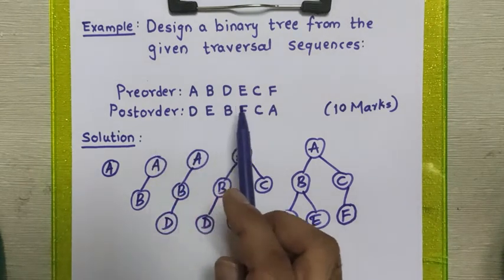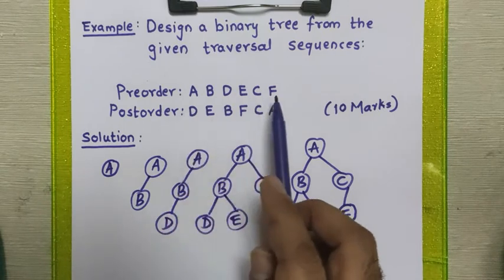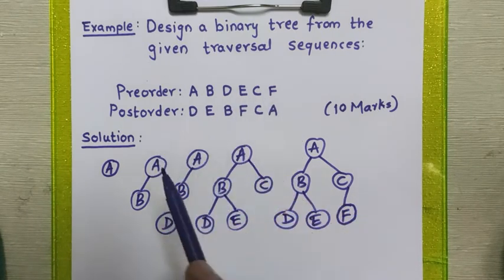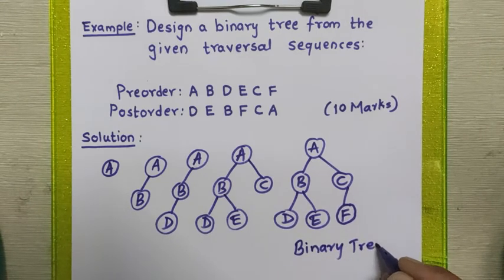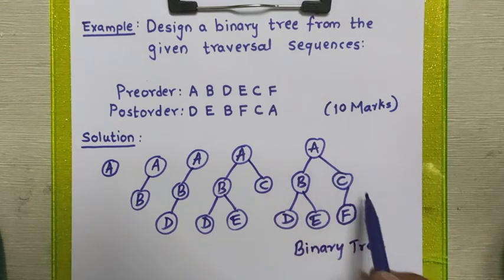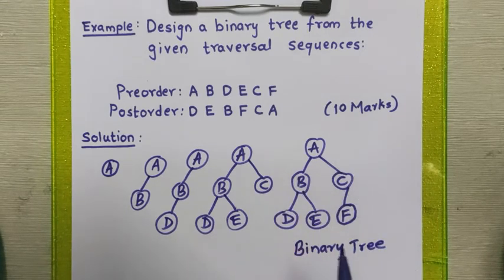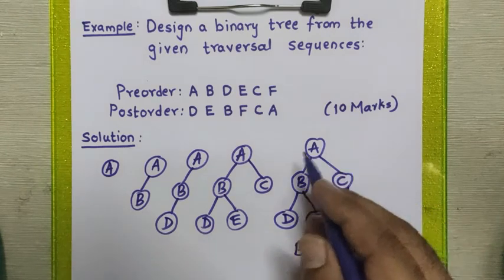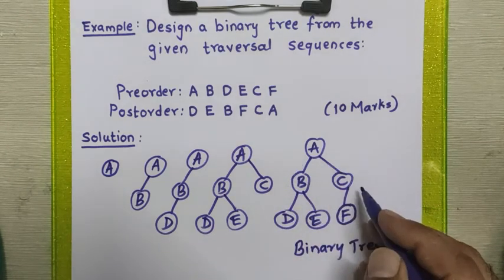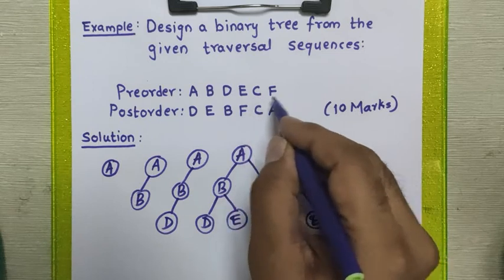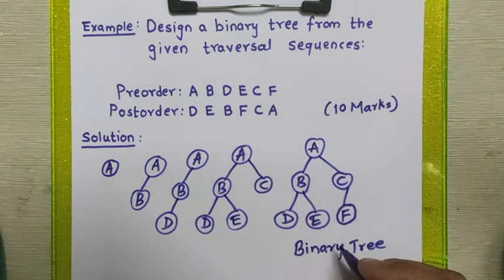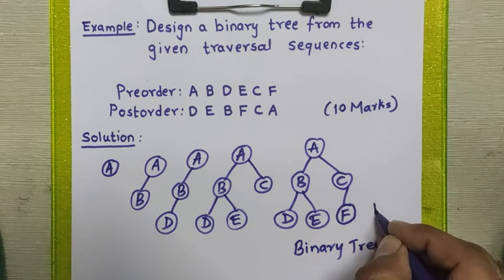We have now placed all the elements of the pre-order sequence, meaning we have successfully reached and placed the last node. This is our final binary tree. To verify, we traverse the entire binary tree in pre-order and post-order fashion. If we get the same sequences as given in the problem, the tree is correct; otherwise, the tree is wrong.